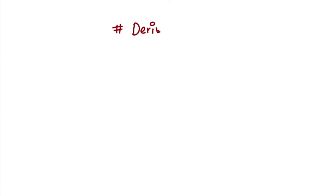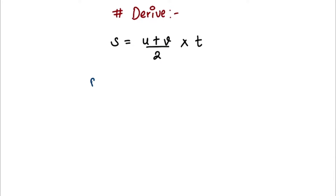Hello everyone, welcome back to our channel. In this video we are going to be deriving another equation of motion, which is s equals u plus v divided by 2, times t. Here our s is total distance traveled.